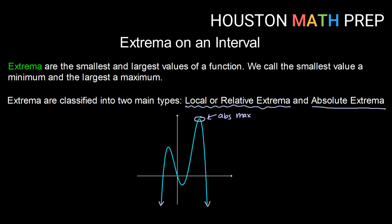If we think instead about local extrema, a local max would be any value that is higher than the values around it. You could think of this as any top of a hill. This absolute max we found earlier is also a local max because it is higher than all the other y values in the zoomed-in window around it. And even though this isn't the largest y value that exists, we also have a local max here because again we have the top of a hill — the largest y value in that window.